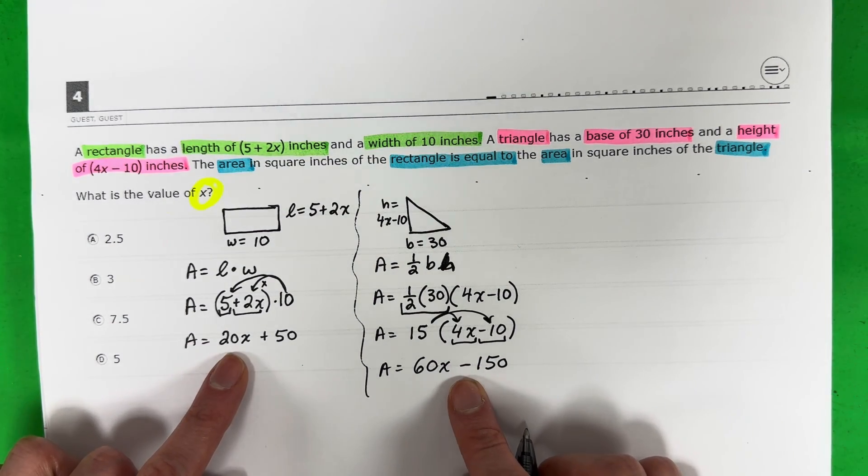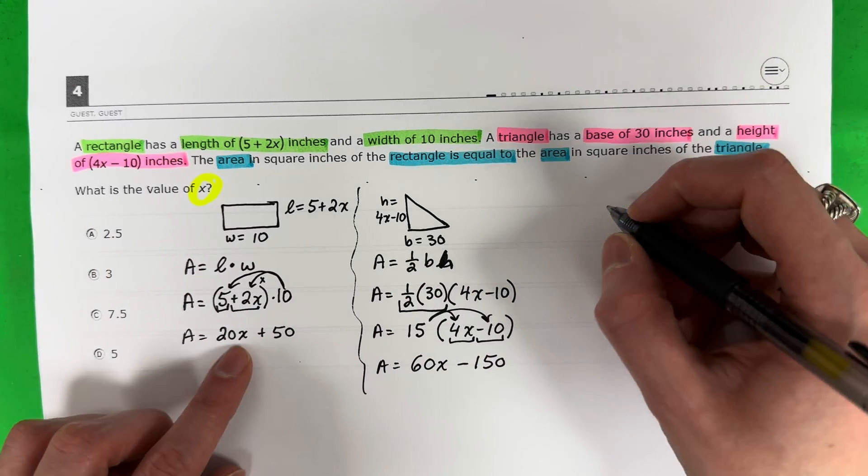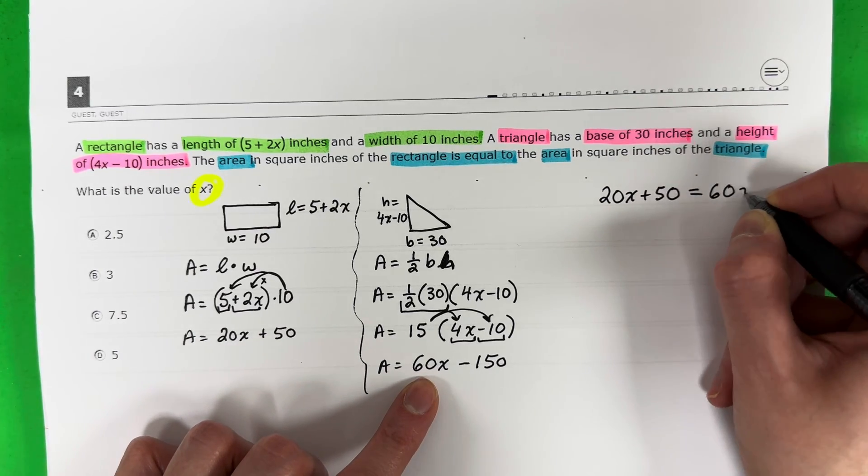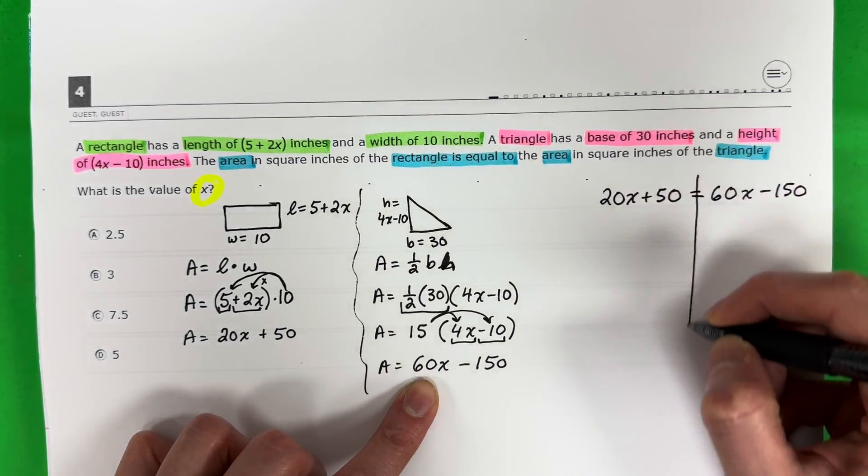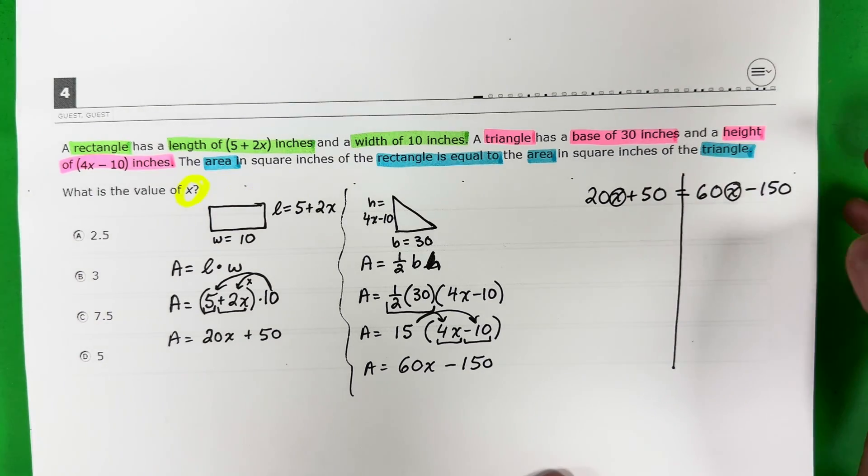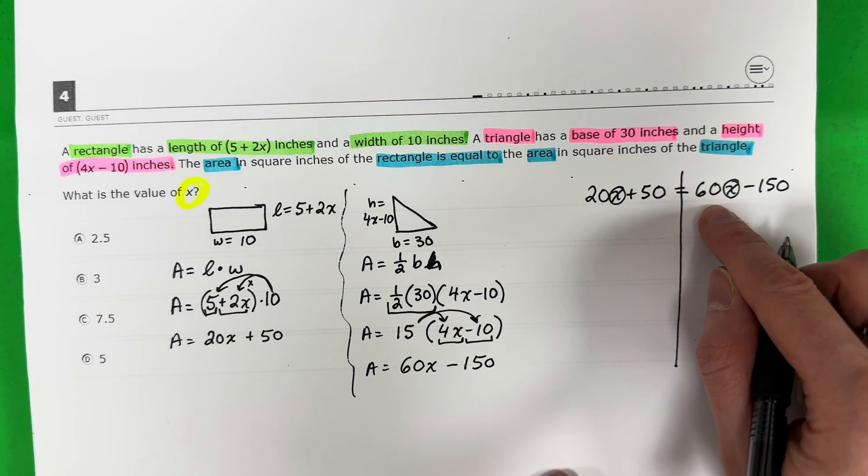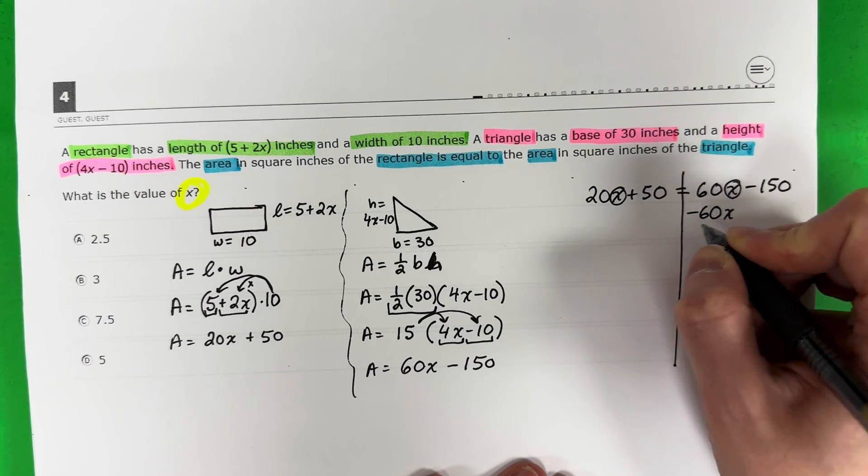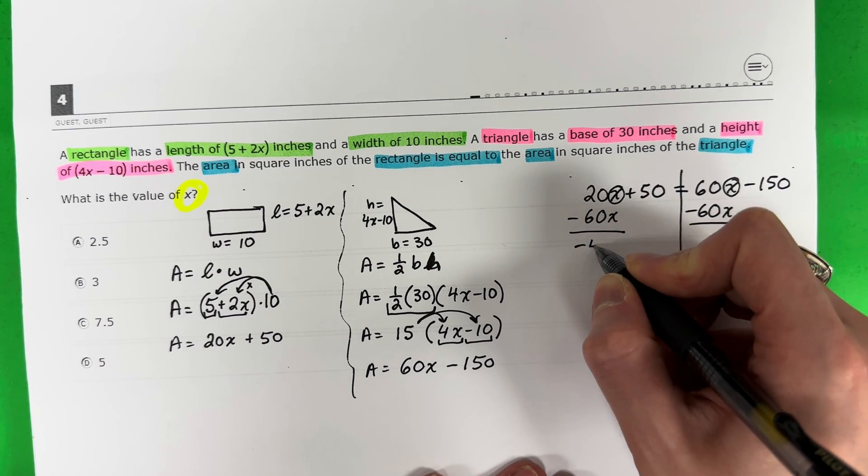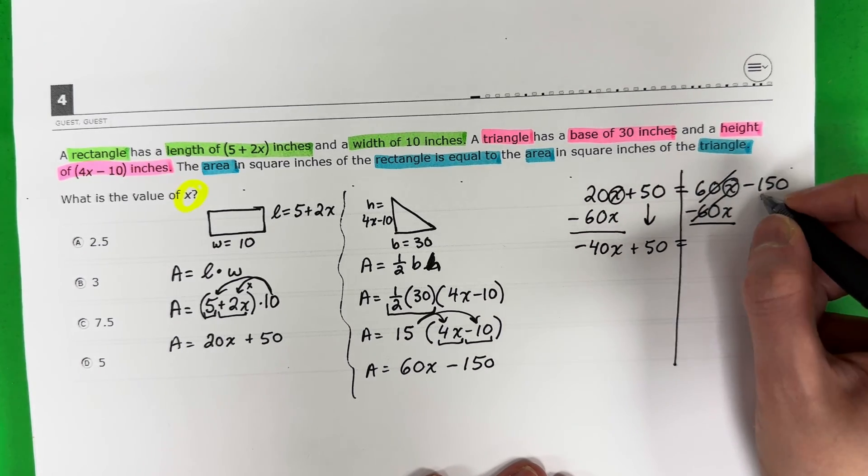All right, so I have both of the areas. Now, they said the area of the rectangle is equal to the area of the triangle. Let's put them equal here. So I'm going to have 20x plus 50 equals 60x minus 150. We're going to go ahead and do our lines. All right, so I have two x's. I need to have only one. So I always just move the one on the right. So let's go ahead and move that letter that's on the right. This is positive. The opposite is negative. So minus 60x. We're going to copy it under the x. 20 minus 60 is negative 40x.